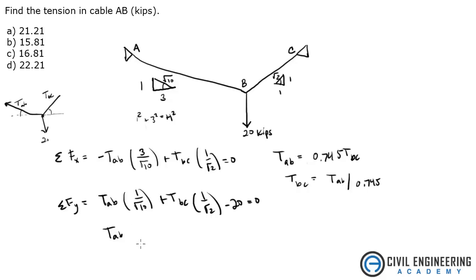So tension AB times 1 over square root of 10, plus 1 over 0.745, times 1 over square root of 2. And that is all multiplied by tension AB. Set that equal to 20.